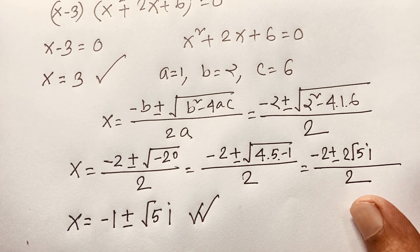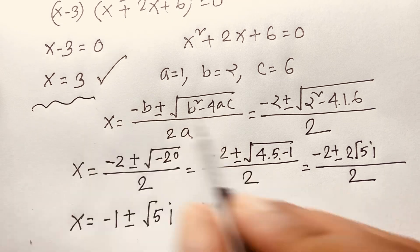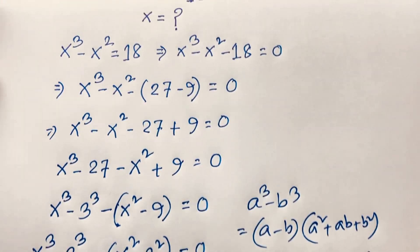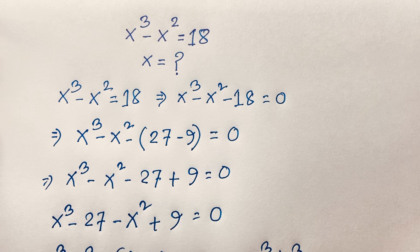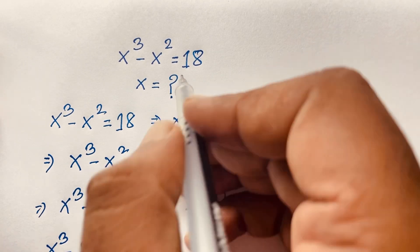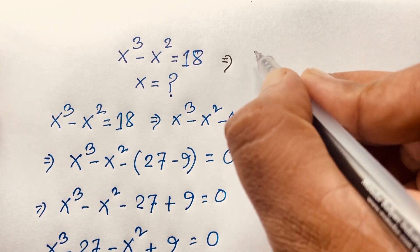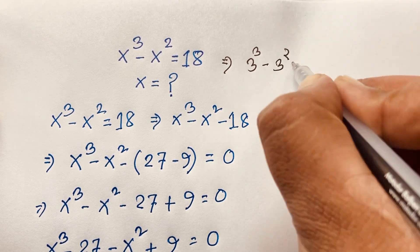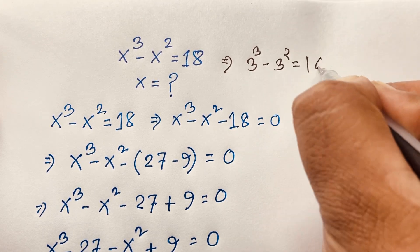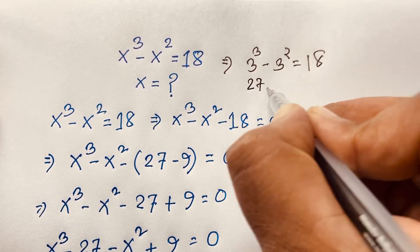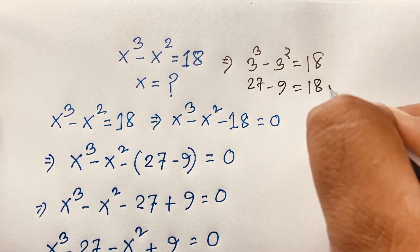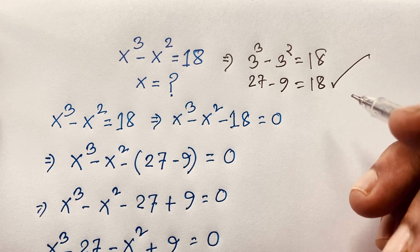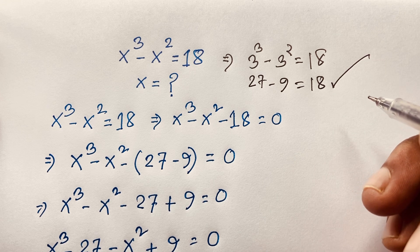You can see, x is equal to 3. This is our real solution. Let's verify: x to the power 3 minus x squared equals 18. Substituting x equals 3: 3 to the power 3 minus 3 to the power 2 equals 18. So 27 minus 9 equals 18. You can see x equals 3 is confirmed. This is our real solution in this exponential expression.